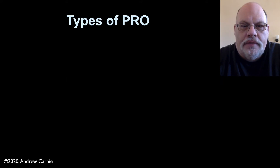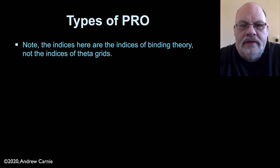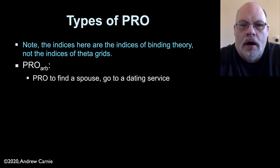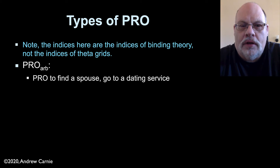First of all, there are a number of different types of pro. All the indices that are about to show up are indices of binding theory, not the indices of theta grids. The first kind of pro is known as pro-arb, or arbitrary pro. Arbitrary pro shows up when the pronoun does not have a specific DP it refers to. Instead, it's sort of a general statement about how life works, or there's an arbitrary reference.